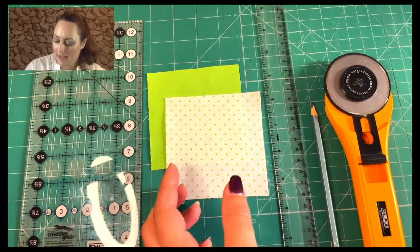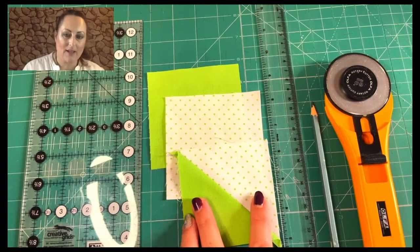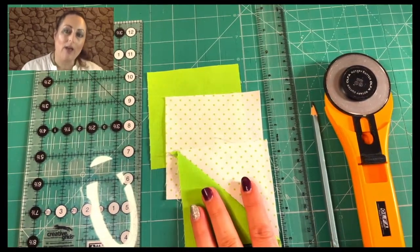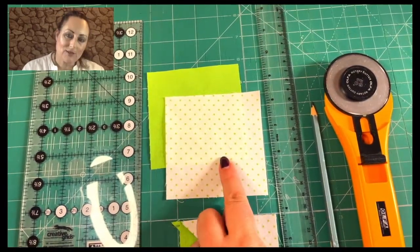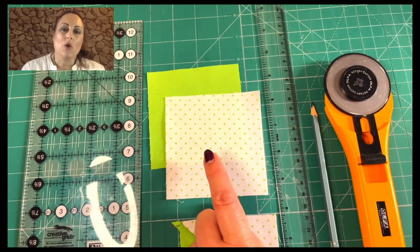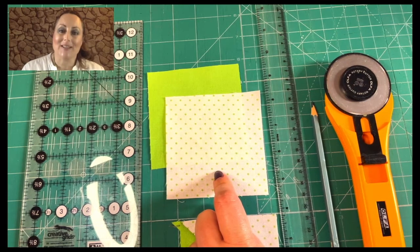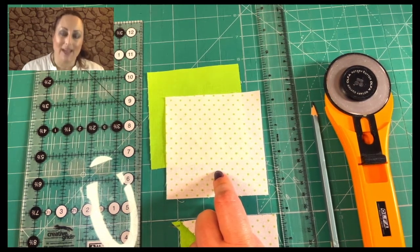So if we want this when it's sewn together to be a three inch square, we need to cut out these squares to be seven eighths of an inch bigger. So your rule is always going to be seven eighths of an inch bigger than your finished size. That's once it has been sewn together.